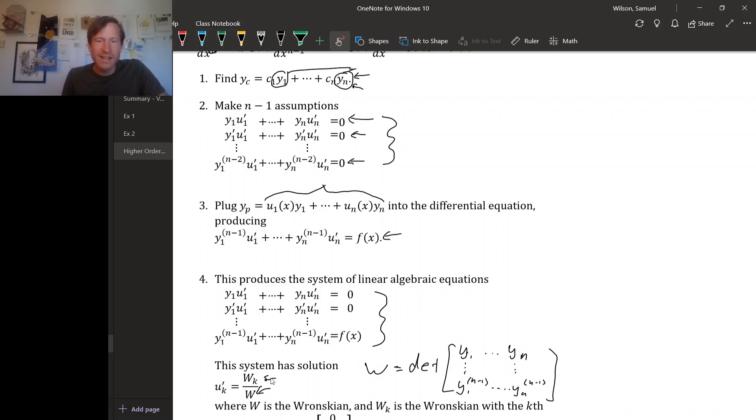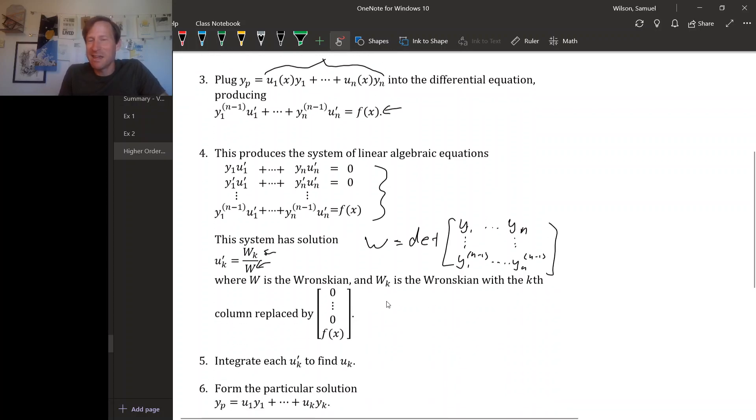But this numerator is actually exactly the same as the Wronskian, except you replace, for W sub k, you replace the kth column with the right-hand side of your system of linear equations, which is just 0 down through f of x.